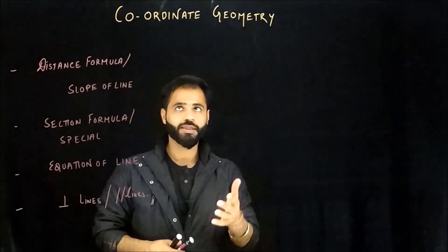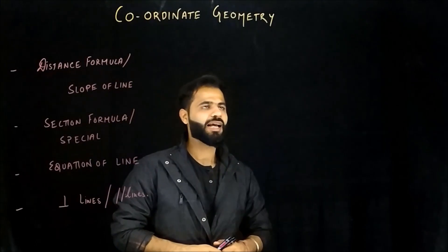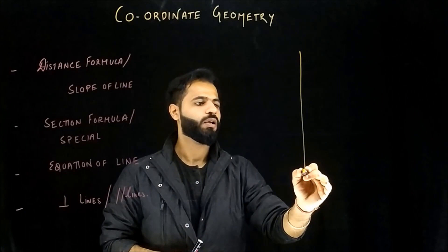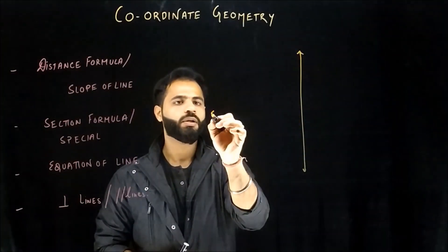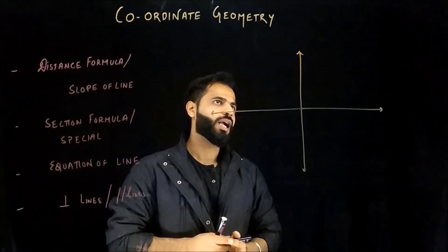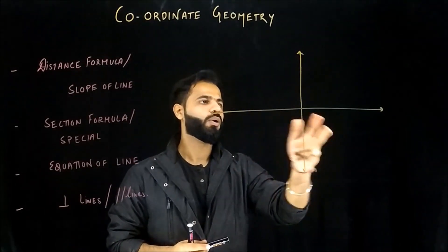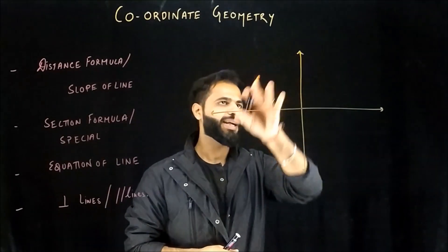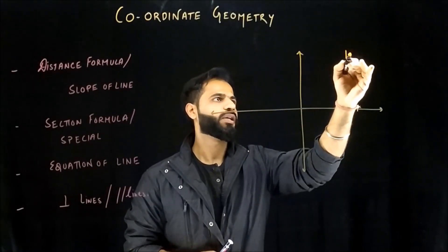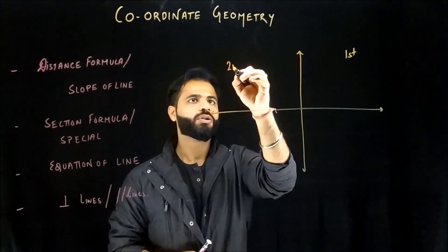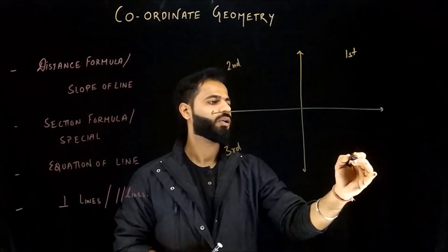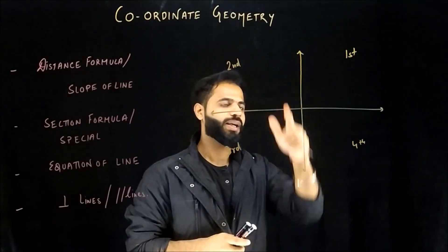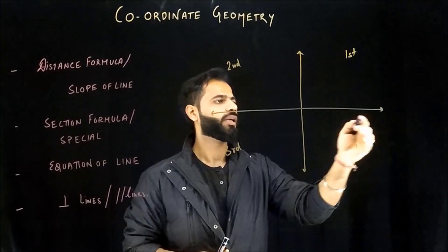Before we start all these concepts, I hope you know the basics of coordinate geometry. If not, let's have a look at the basics before we move ahead. So basically we have a coordinate plane, so that we can describe each and every point with a unique identity. These are the two axes which divide my plane into four quadrants: first, second, third, and fourth quadrant.